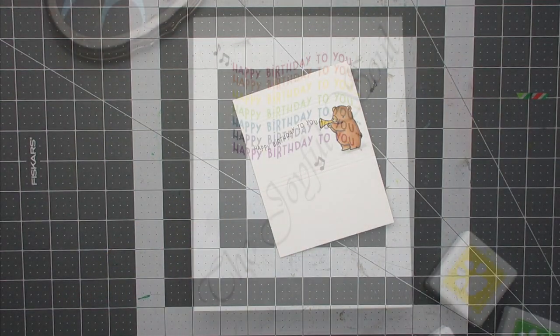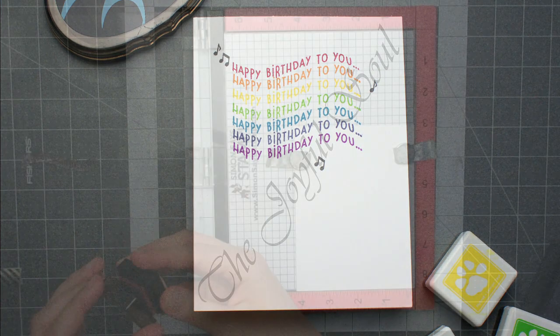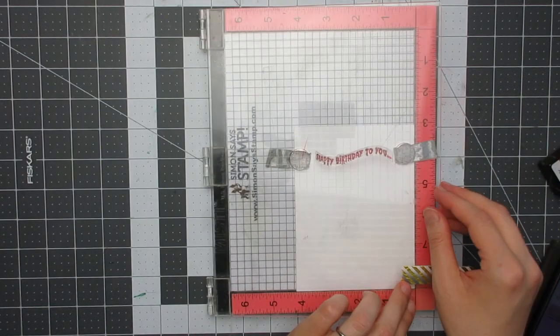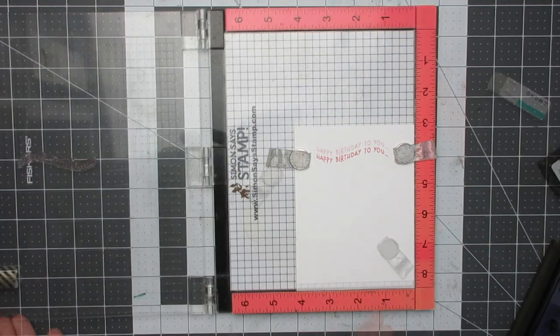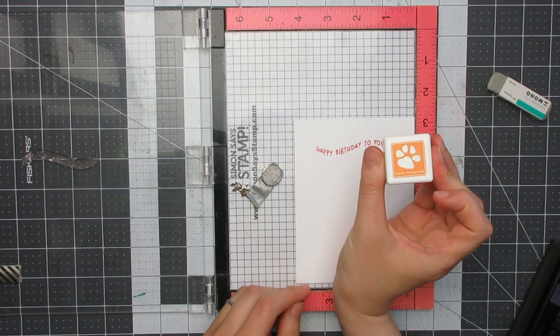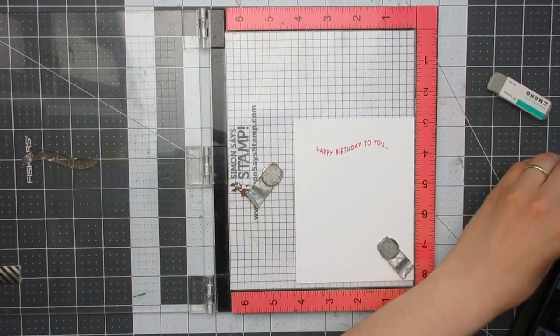Moving on to card number two, and this time I'm again going to be using the Happy Birthday to You sentiment, but I'm going to be stamping it repeatedly and I'm going to be making a rainbow colored version of this, which is perfect for this month being Pride Month if you want to make a Pride birthday card.